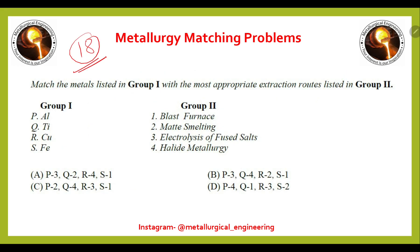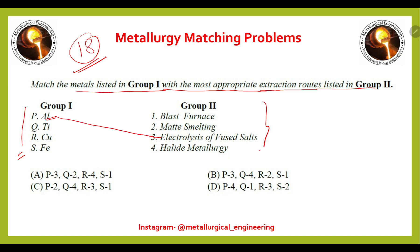This is the 18th matching problem — match metals with their most appropriate extraction routes. Aluminium is extracted by electrolysis of fused salt (P3), titanium matches with halide metallurgy (Q4), copper matches with matte smelting (R2), and iron is extracted via blast furnace (S1). The right answer is option B: P3, Q4, R2, S1.